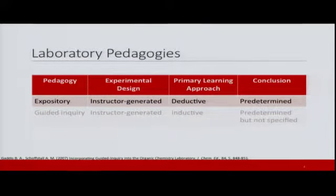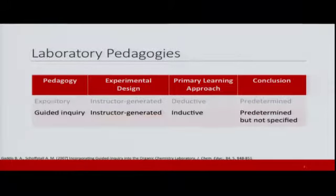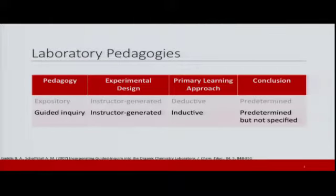In traditional labs, the lab manual basically tells students the result they have to get — their goal is to verify the result. Not a lot of emphasis is placed on students thinking about the results of their experiments. On the other hand, guided inquiry experiments have predetermined but not specified outcomes. Students are not told what they will get as a result of their experiment, so they have to discover it themselves.